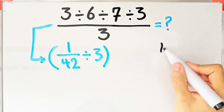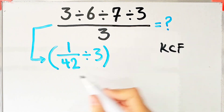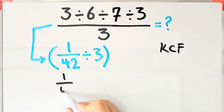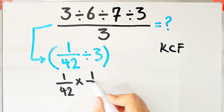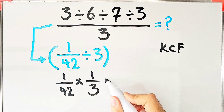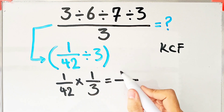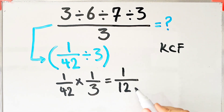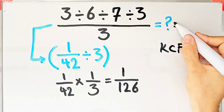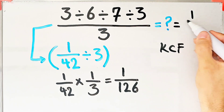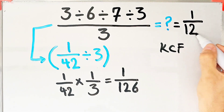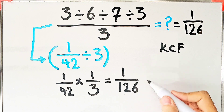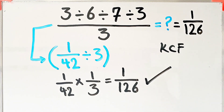We use the KCF rule again. We keep the first fraction as it is, change the division sign to the multiplication sign, and flip the second number. Now we have 1 over 126. The final answer of this question equals 1 over 126. Thanks for watching. To see more math videos, subscribe to the channel. Goodbye.